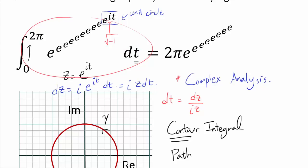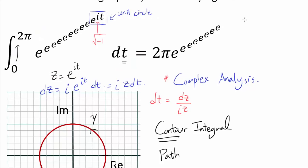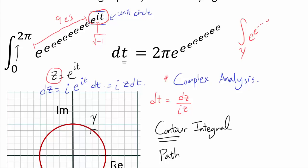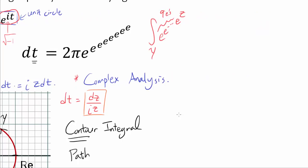So let's try rewriting this entire integral. This entire integral is going to be the integral along the contour gamma, and in our case we are going counterclockwise direction because our t is going from 0 to 2π. We are going to have 9 e's right here — that's our 10th e, but e^(it) is going to change to z. So we're going to have 9 e's to the z power, and our dt is going to change to dz/(iz). And of course, 1/i can be factored out. So we have this as our new integral.